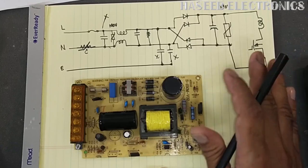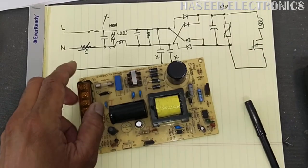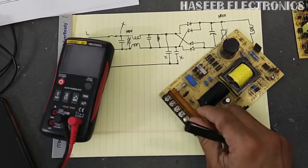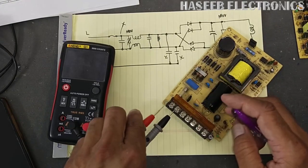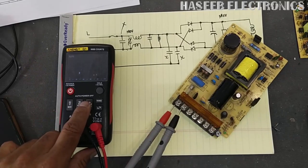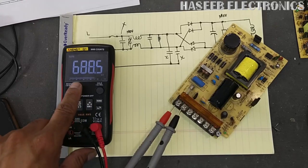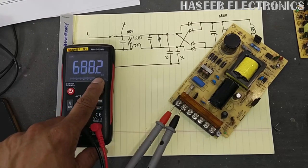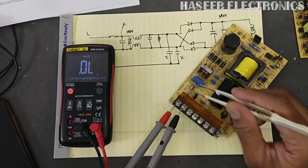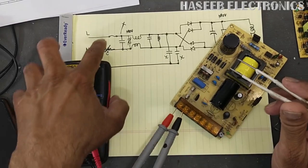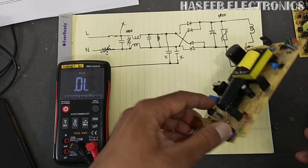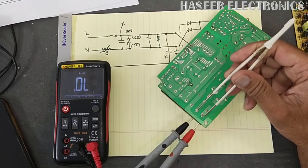First of all we will do cold testing and I will demonstrate how we can detect the problem. Connect the multimeter in line and neutral and set to continuity mode or resistance mode. It must show high resistance in kilo-ohms — it is 680 kilo-ohms. If you cannot find continuity or the resistance is open, check this fuse. If the circuit is open we cannot find continuity.